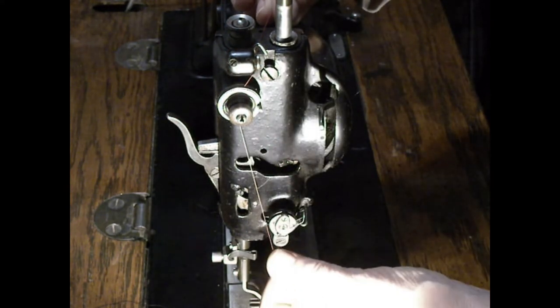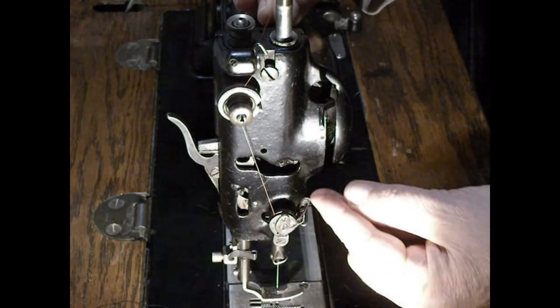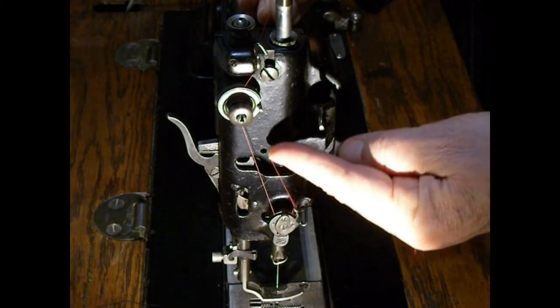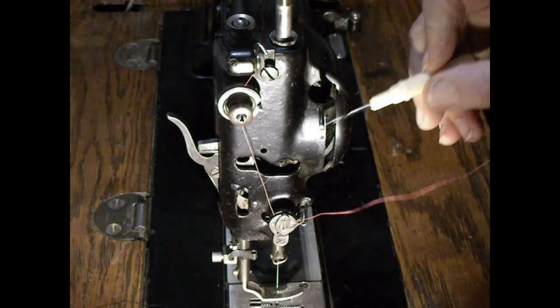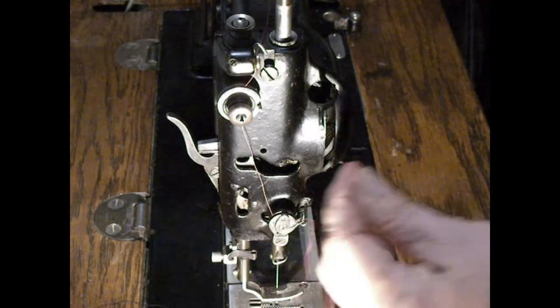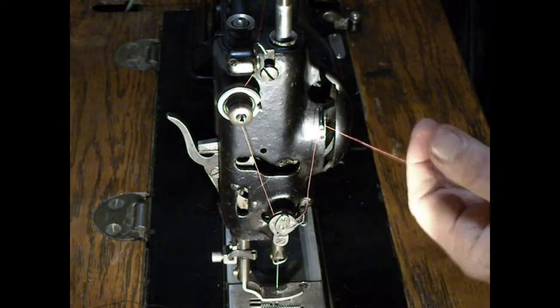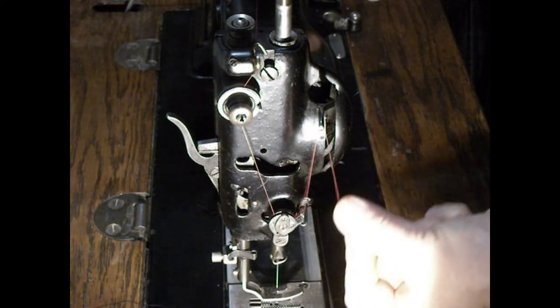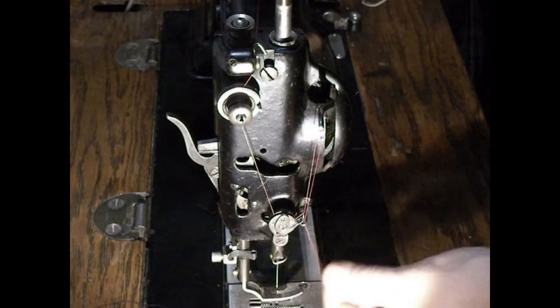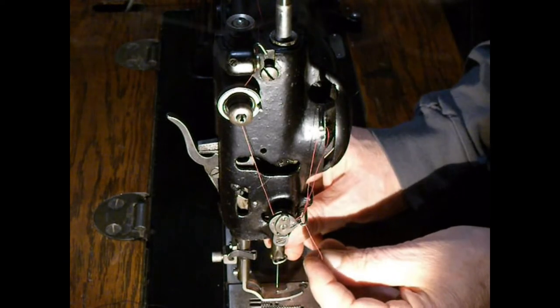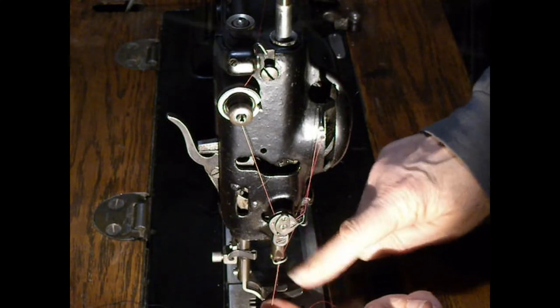Bring it down to the take-up lever spring and make sure it snaps up inside that little spring holder. Then thread it through the take-up arm from back to front. There's another little wire hook guide down there in front, and then down to the needle bar guide.